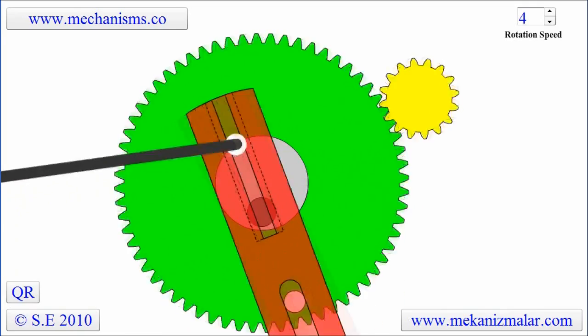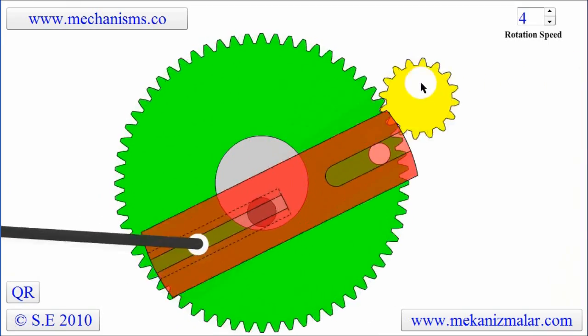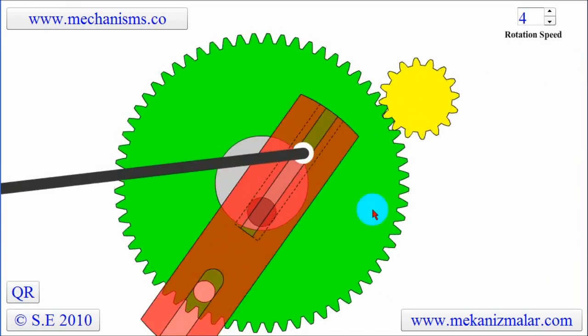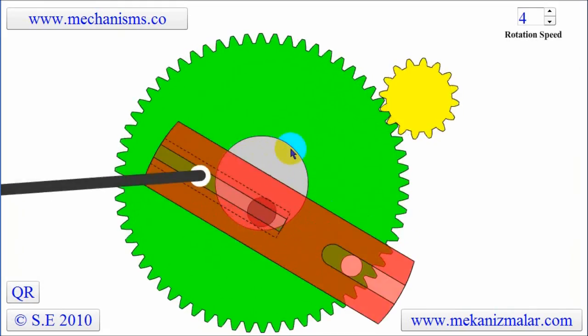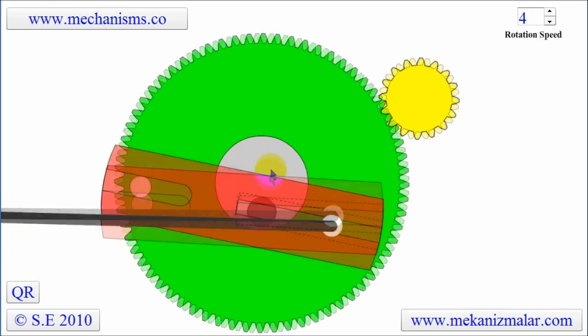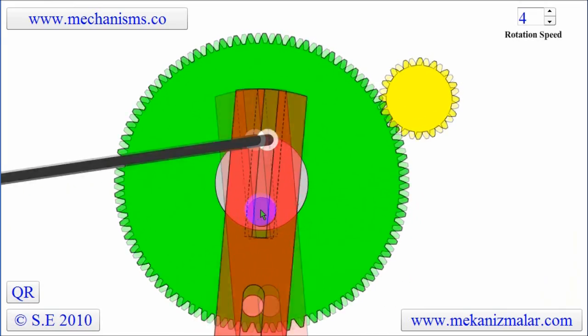As you can see in this animation, the yellow pinion gear drives the green bull gear. The green bull gear rotates around the gray boss which is not rotating. A small black shaft which is off-center extends outward from the gray boss.